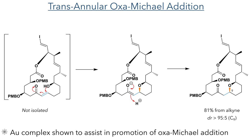In the final step of the tandem reaction sequence, a transannular oxa-Michael addition occurs. The hydroxyl group undergoes conjugate addition and forms one of the necessary cis-tetrahydropyran moieties contained in exigeolide. Studies showed that the gold complex added to promote the Meyer-Schuster rearrangement also assists in this step, as reactions conducted without the gold complex did not show this transannular oxa-Michael addition. Overall, this tandem reaction sequence produced the pyran-containing macrolactone in an 81% yield from the starting alkyne, with a dr of greater than 95:5, with the isomerism occurring at carbon-9.